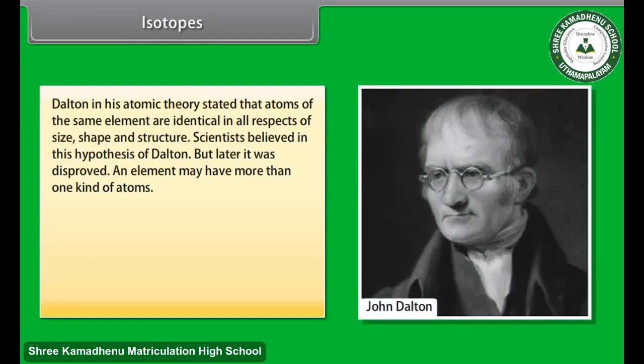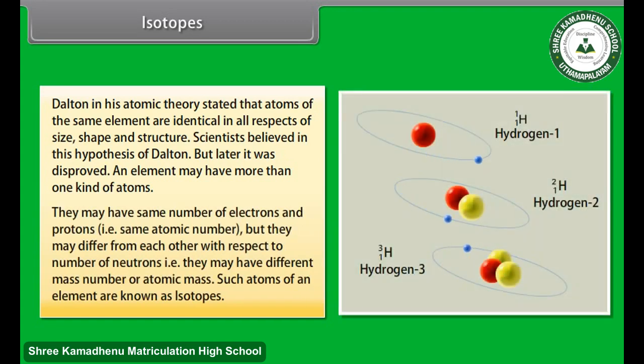Isotopes. Dalton in his atomic theory stated that atoms of the same element are identical in all respects of size, shape, and structure. Scientists believed in this hypothesis of Dalton, but later it was disproved. An element may have more than one kind of atoms. They may have same number of electrons and protons, that is, same atomic number, but they may differ from each other with respect to number of neutrons, that is, they may have different mass number or atomic mass.